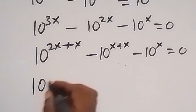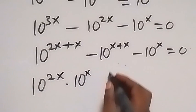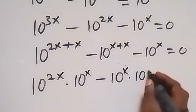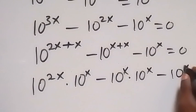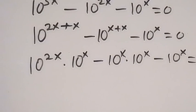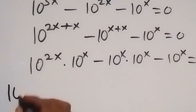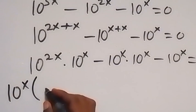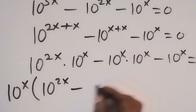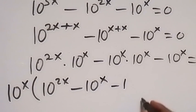Now from the law of indices we can rewrite this, and it will be 10 raised to power 2x times 10 raised to power x. Also here we have minus 10 raised to power x times 10 raised to power x, minus 10 raised to power x equals to zero. From here we have 10 raised to power x common — we can take it out — so this will become 10 raised to power x, then what we have left is 10 raised to power 2x, then minus 10 raised to power x, then minus 1.